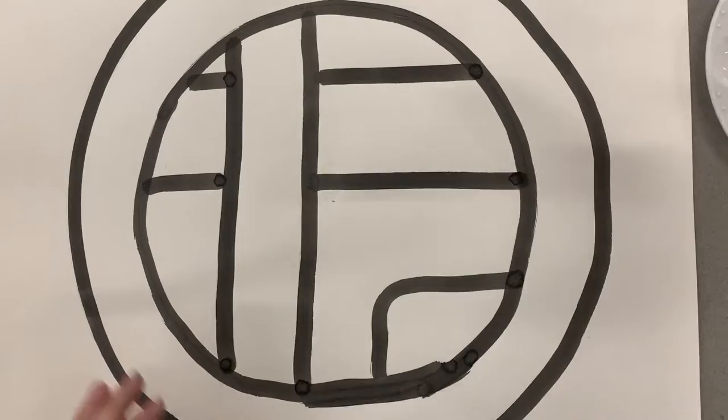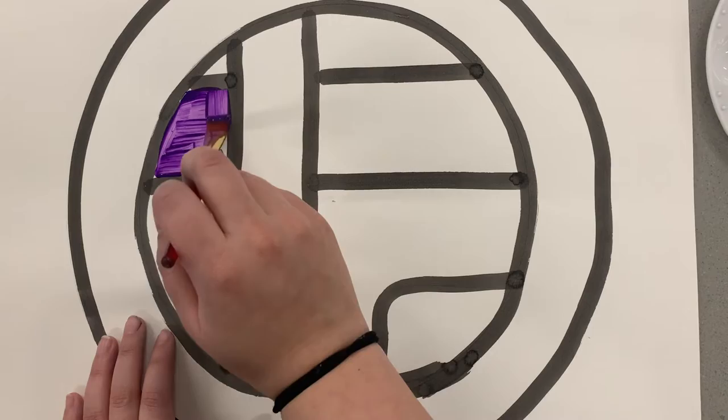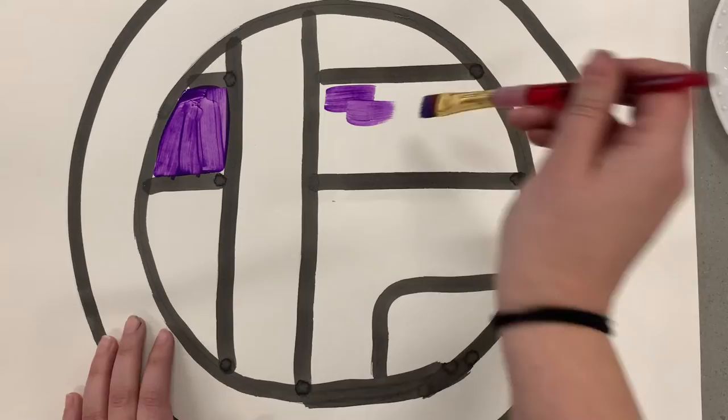Now you're going to start painting in between those shapes. You can do whatever colors you want. I tried to take inspiration from Jaime Dominguez's paintings and do similar colors just to make it look similar to how he would paint.